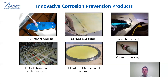Here's an overview of some of AVDEC's innovative corrosion prevention products. We do high-tech antenna gaskets, sprayable sealants, injectable sealants, high-tech polyurethane rolled sealants, high-tech fuel panel gaskets, and connector sealing. We'll talk a little bit more about some of these products on the upcoming slides, and there's more information about all these products on AVDEC's website as well.